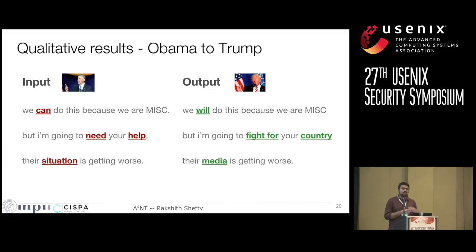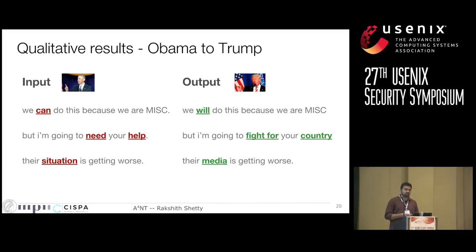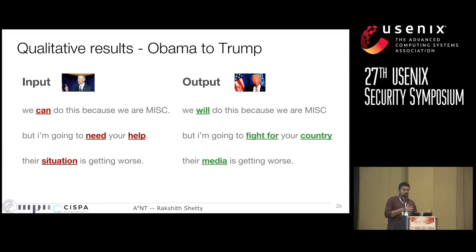You can push this to the extreme and try obfuscation on political speeches of Obama and Trump. This is a difficult case because the two authors have very distinct content and style variation. The model finds it hard to distinguish which is the content part and which is the style, exacerbated by the smaller dataset. For example, going from Obama to Trump style, 'say we can do this, but we will do this' becomes 'but we will do this'; 'I'm going to need your help' changes to 'I'm going to fight for your country'; and 'their situation is getting worse' becomes 'but their media is getting worse.' This shows the limitations when two authors have very distinct styles with a small amount of data.